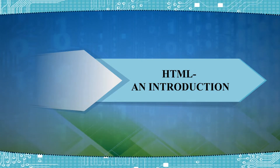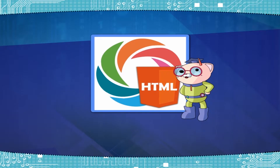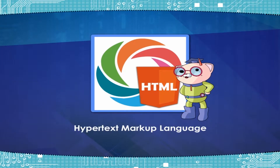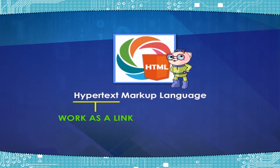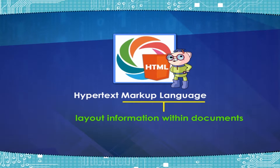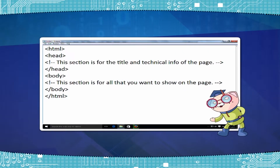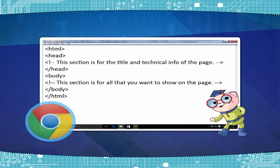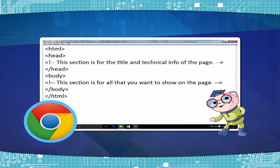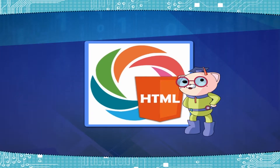HTML, or hypertext markup language, is a simple language used for developing web pages. Hypertext is simply a piece of text that works as a link. Markup language is a way of writing layout information within documents. Basically, an HTML document is a plain text file that contains text and nothing else. When a browser opens an HTML file, the browser will look for HTML codes in the text and use them to change the layout, insert images, or create links to other pages.